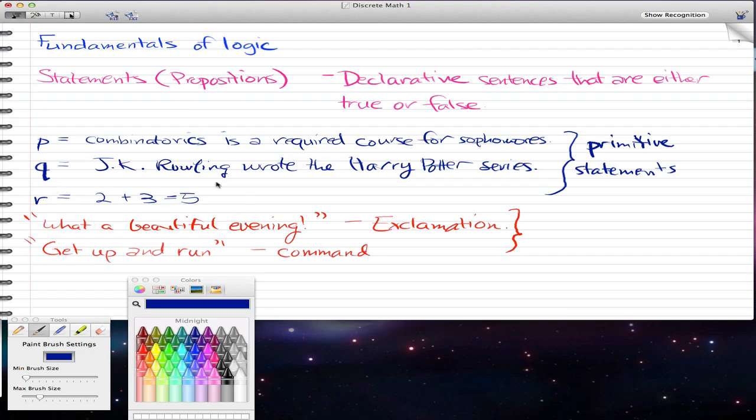Now how about these two sentences? What a beautiful evening, there's an exclamation, and get up and run, that's a command. What do you think? Are these primitive statements? Well, they're not primitive statements. The reason is because they vary. What a beautiful evening, well evenings can be rainy, sunny or cold or hot. So you can't really say if it's true or false. Get up and run, that command can happen at any time. So we do not regard sentences such as exclamation or commands as statements because they don't have a truth value. They can't really be said true or false at any time. But for primitive statements, primitive statements can be answered as true or false at any time.